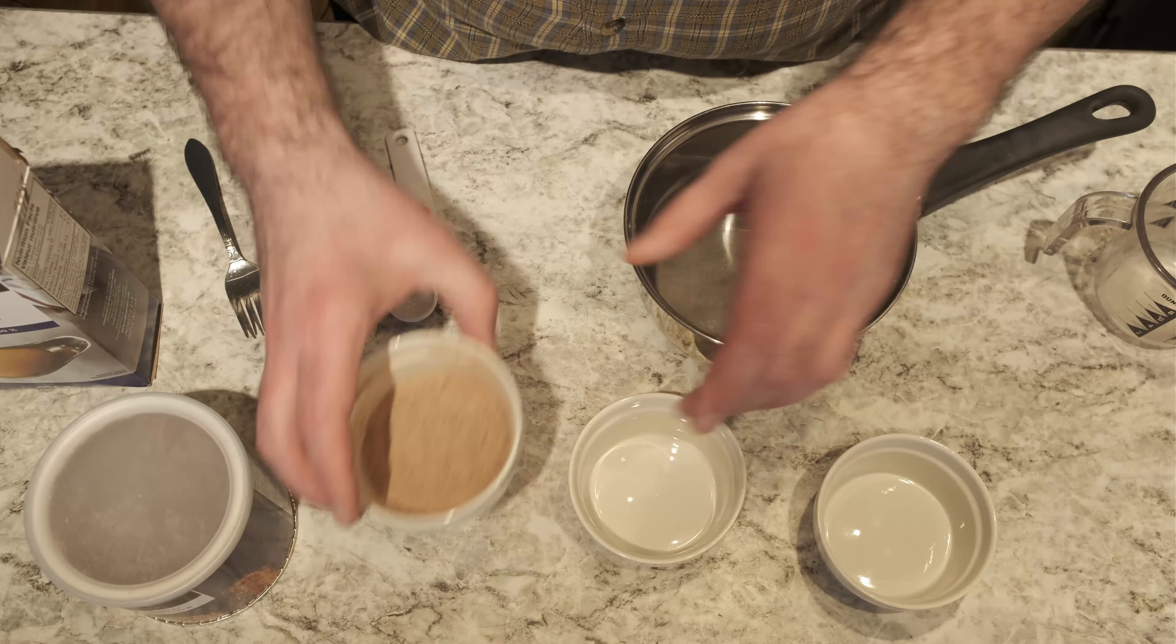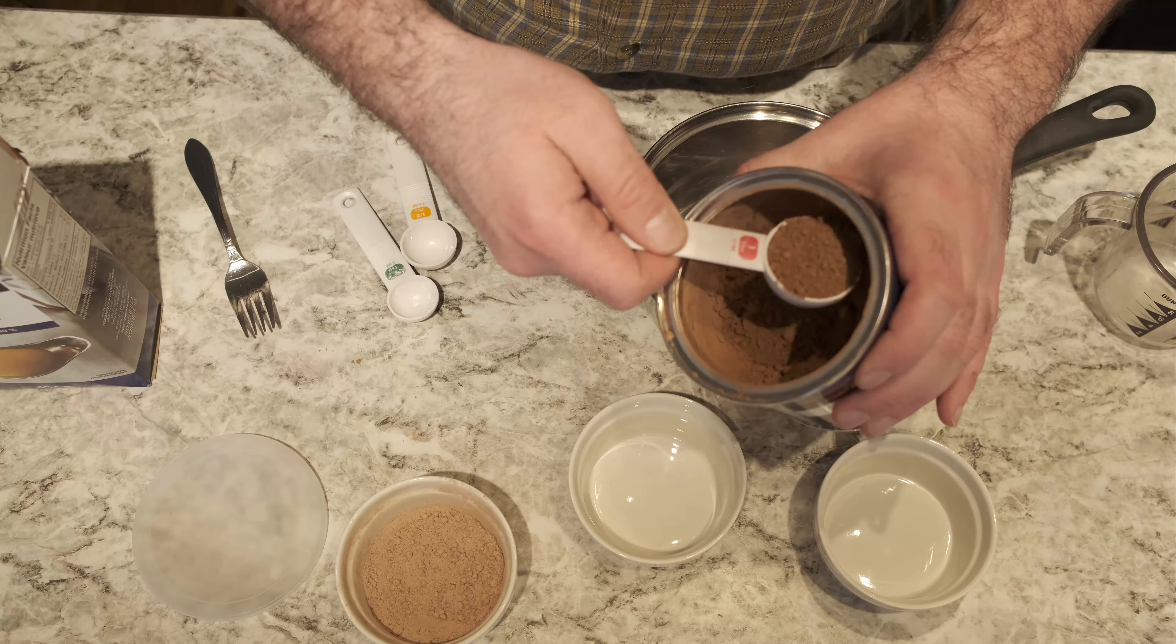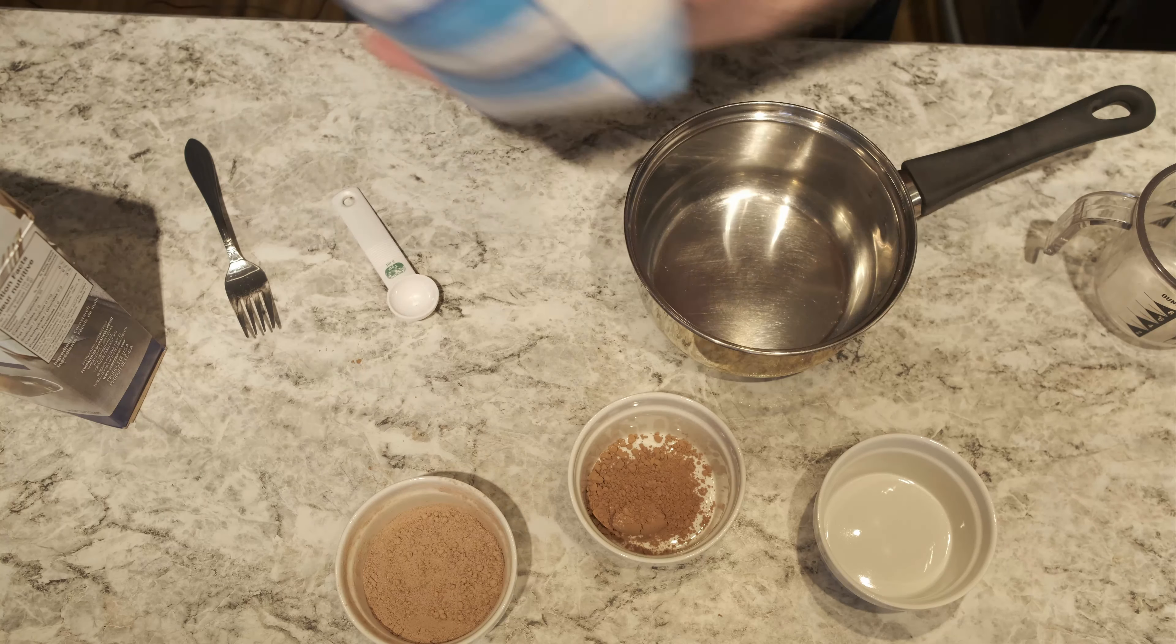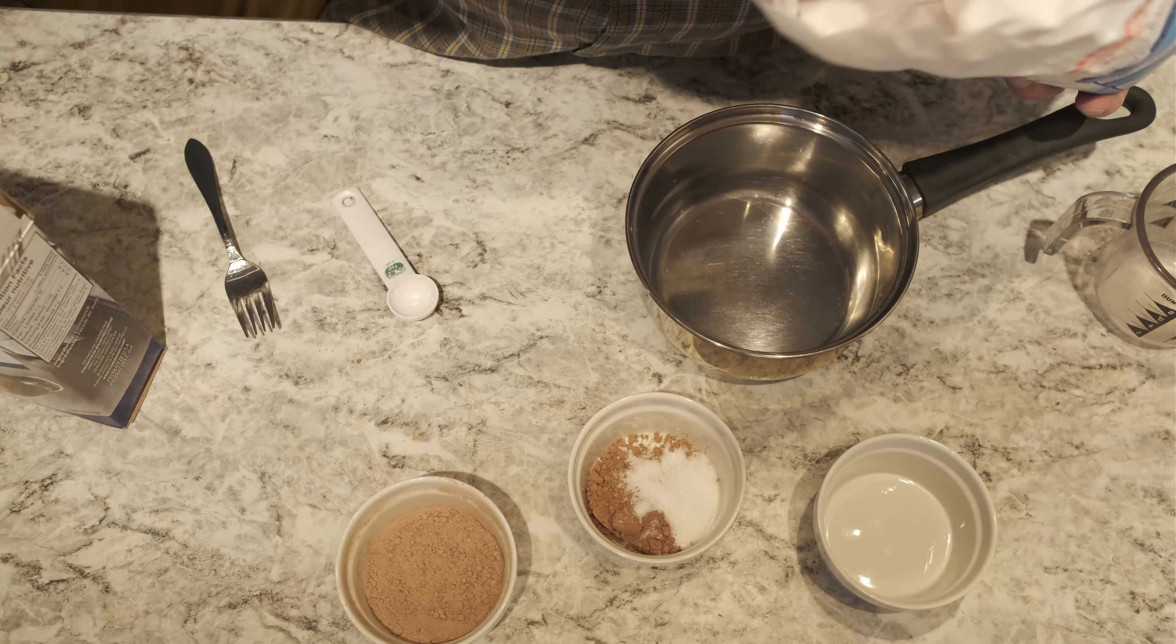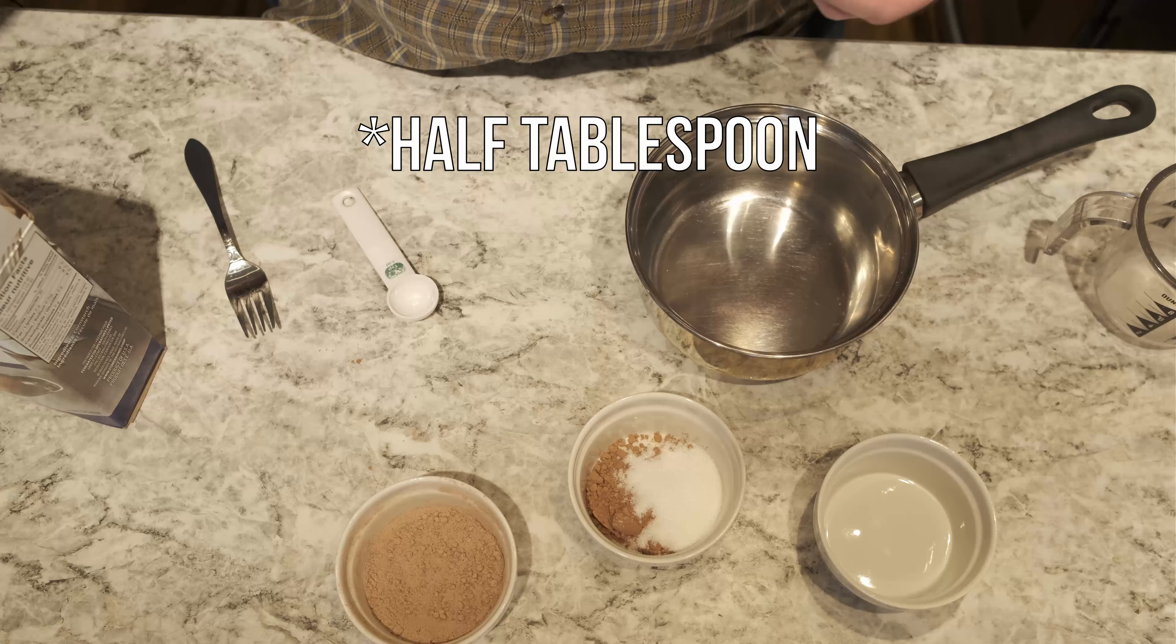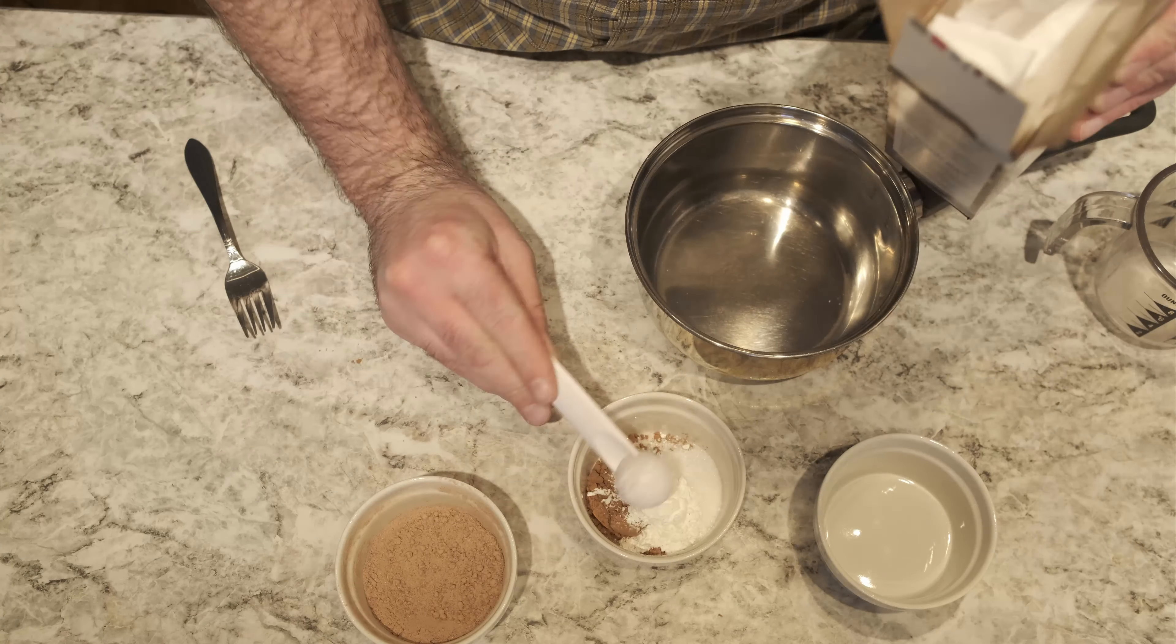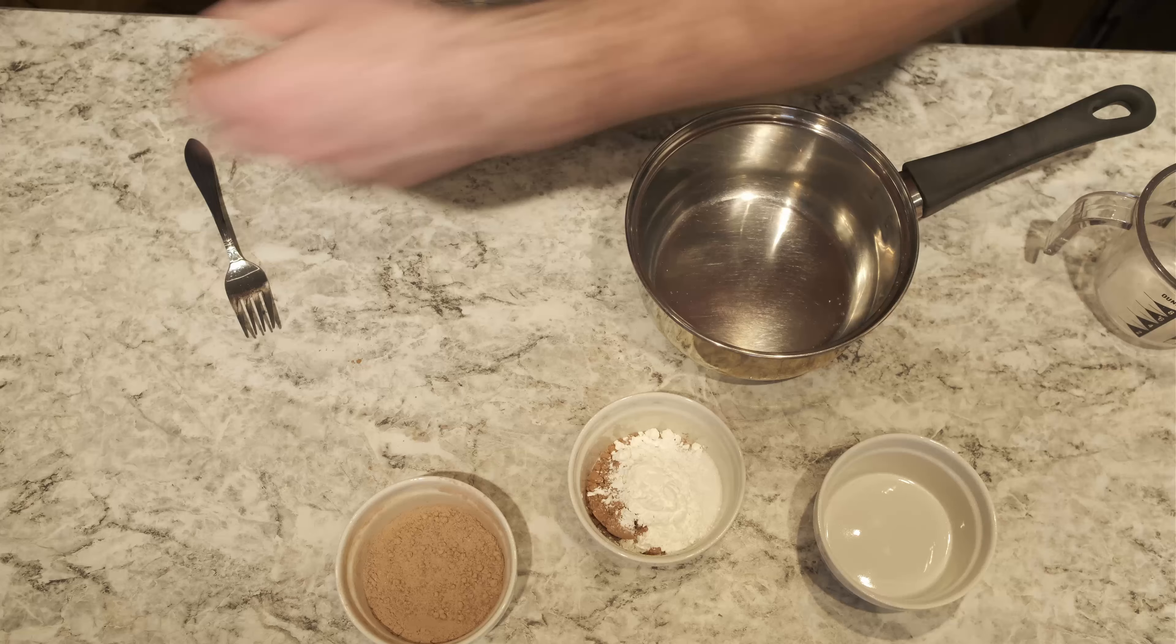First, one tablespoon cocoa, loosely packed. Set that aside. Now just regular granulated sugar - I'm using a half teaspoon measure - so one tablespoon. And two loosely packed scoops of cornstarch.